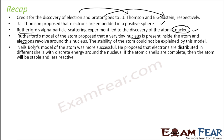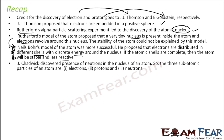Then Niels Bohr made an improvement on Rutherford's model. He proposed that electrons are distributed in different shells, and these shells have different discrete energy levels around the nucleus. And if the atomic shells are complete, then the atom will be stable and less reactive. So this theory actually gave answers to a lot of questions which were unanswered, especially on the stability of the atom.